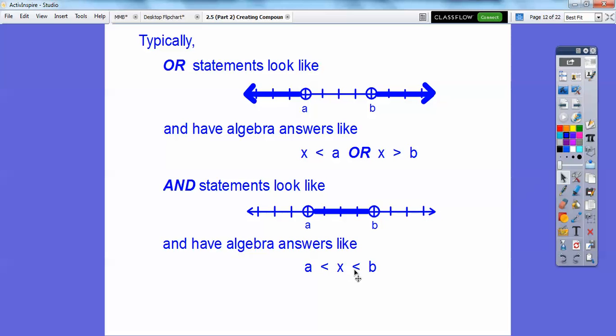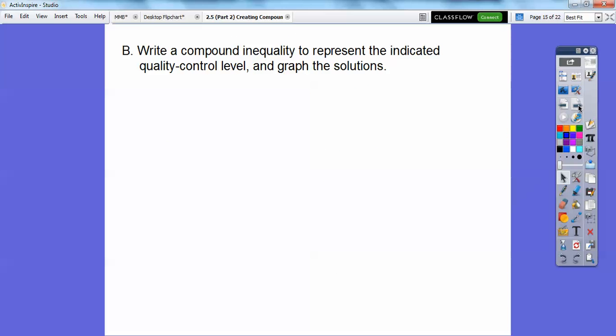And there's an inequality in between the two. It doesn't matter if you have closed circles, so they could be closed circles right there. Just make sure you have the equals bar on these. Same thing right there, and they don't have to be both open or both closed. One could be open, one could be closed. Just make sure that you have no equals bar on the open circle right here, no equals bar on the open circle. Anyways, I just copied and pasted that. So, write a compound inequality that represents the indicated quality control levels, and then graph the solutions.